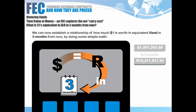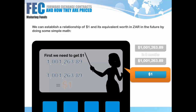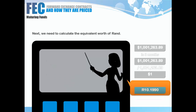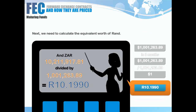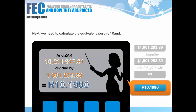To find this, we work the deposit down to a single unit value — divide the maturing deposit value by itself. So 1,001,263.89 divided by itself equals one dollar. We simultaneously take the rand maturing value of 10,211,917.81 and divide it by the same nominal dollar figure. If that dollar divided by that value equals one, what is the rand equivalent? By dividing 10.2 million by the 1 million dollar nominal, it works out to a rand exchange rate of 10.1990.